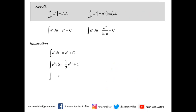We have the integral of 3 raised to x dx. Following the formula, the integral of a to the u du is a to the u over ln a plus c, where a is equal to 3 and u is x. The derivative of x is simply dx, so this is equal to 3 raised to x over ln 3 plus c.